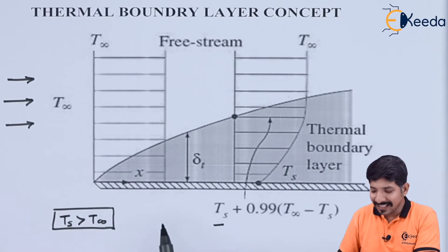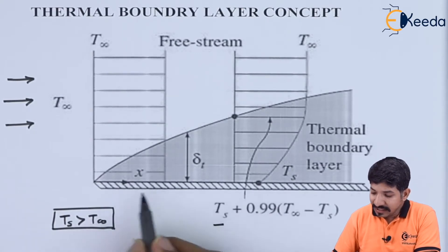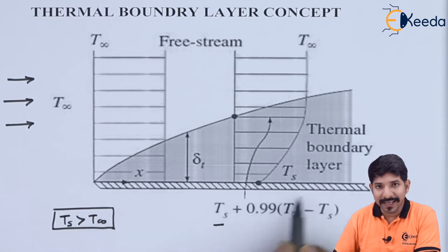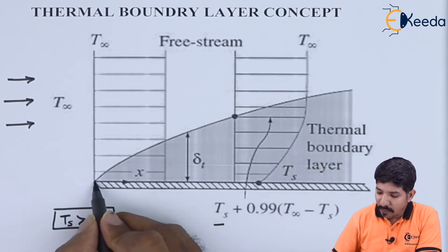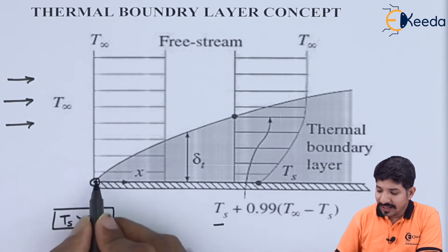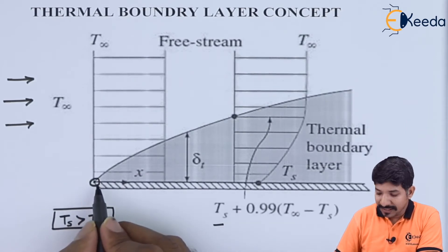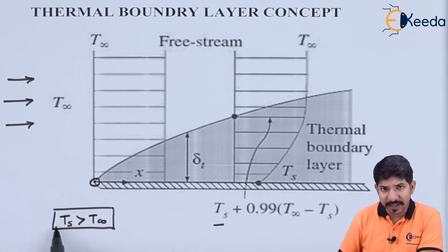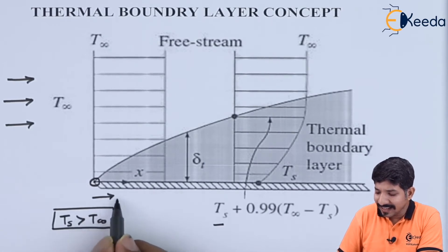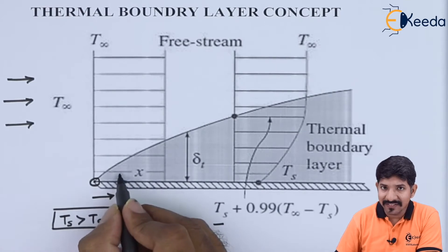If this is the case, then obviously the heat will flow from the plate to the fluid. At the leading point, the temperature of the fluid molecule is the same as the temperature of the surface. Then, as we travel in the x direction, the temperature will start varying.